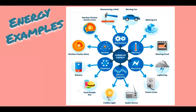Here are some energy examples. If you look at the middle of the diagram, it says 'forms of energy,' and it's broken down into six different kinds: mechanical, thermal, electrical, electromagnetic, chemical, and nuclear. On the outside of each of those circles are more examples. My section is mostly going to focus on mechanical energy, and you'll get some of the other examples later today.